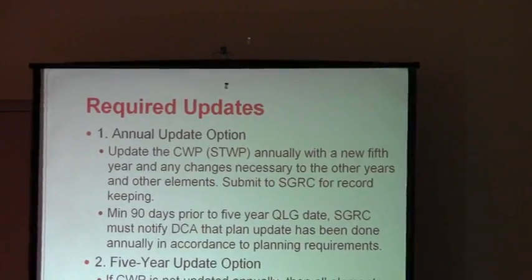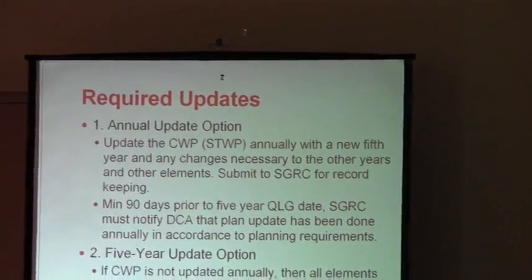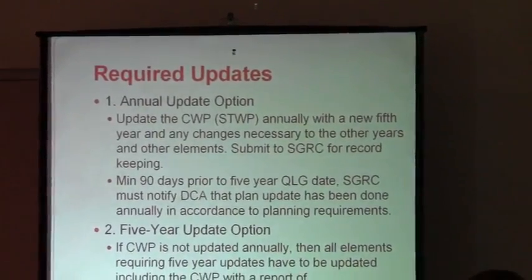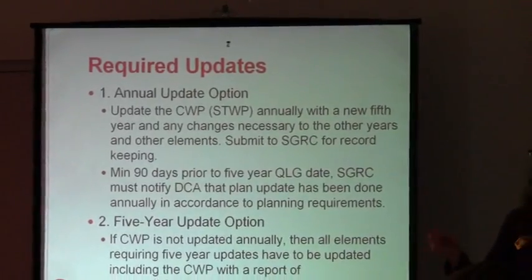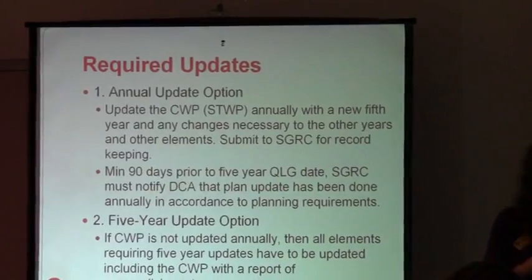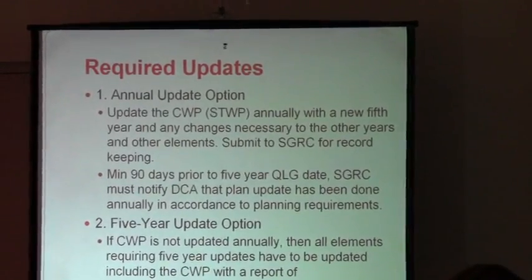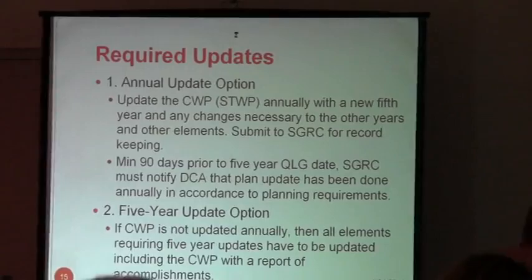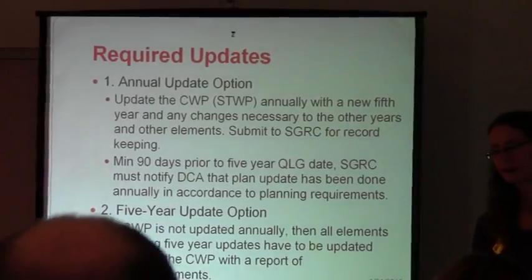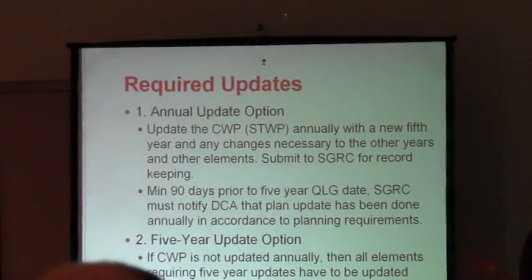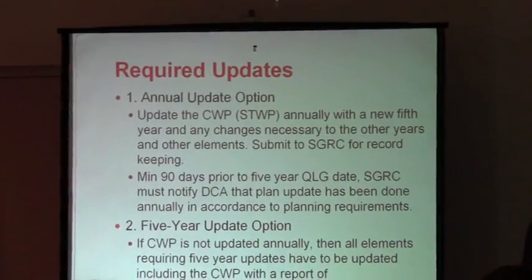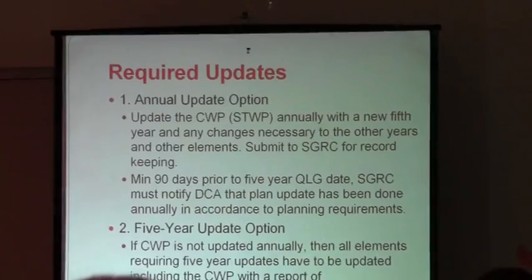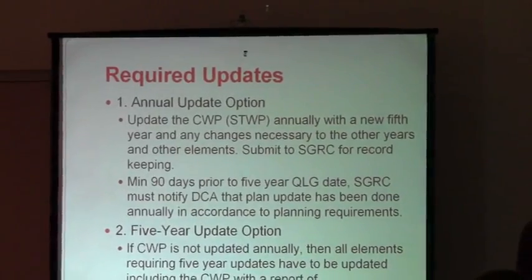In that status column, you can indicate: we're continuing, we delayed this, we postponed it, no funds available, lost interest, or completed. So add a new fifth year, drop the old year off, and do that on an annual basis.